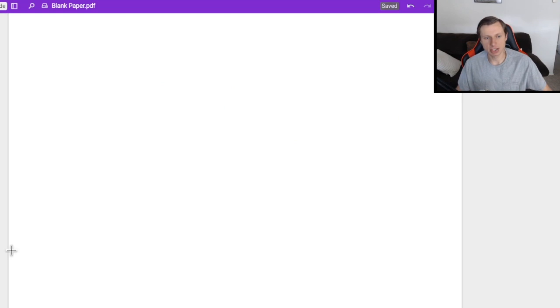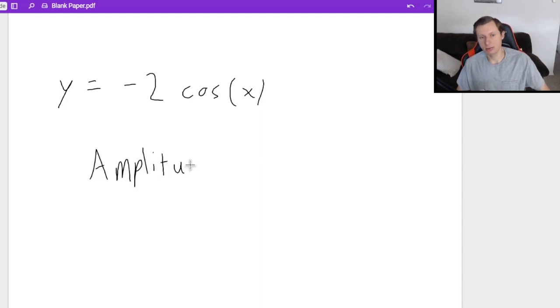Now let's say I have this function, y equals negative two cosine of x, or something like this. First of all, the fact that it's cosine doesn't matter. And the negative doesn't matter either. Amplitude cannot be negative. I repeat, cannot be negative. The answer is just two.